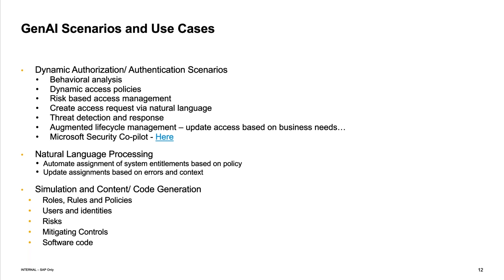You can use AI to generate any kind of users or identities to simulate with or test your process. You can use AI to create example risks — for example, 'show me the risks associated with a combination of Ariba and Concur, or Ariba and S/4HANA.' In the area of mitigating controls, where you're trying to test whether users have performed activities which might need review or could be a violation of policy, you want to use your AI tools to try to detect and take action in those cases.